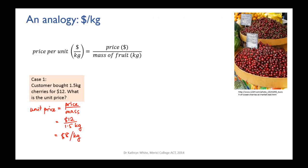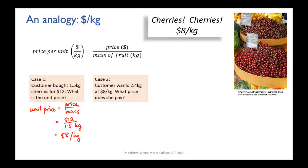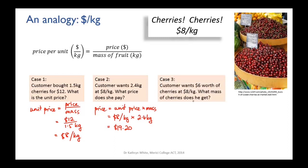You can use that relationship in different ways. If someone wants 2.4 kilos of cherries, you rearrange it: price equals unit price times mass, so $8 per kilo × 2.4 kilos = $19.20. Or if a customer says 'I've got $6, what mass of cherries can I buy?', you rearrange again: mass equals price divided by unit price, so $6 ÷ $8 per kilo = 0.75 kilos. As long as you know two of the three quantities — unit price, total price, or mass — you can find the third.